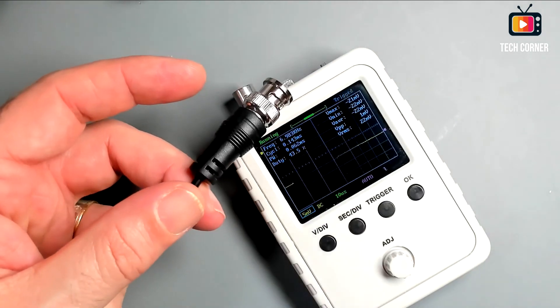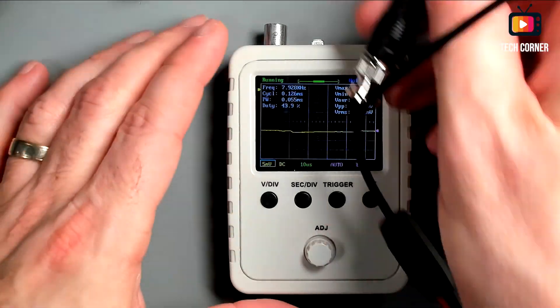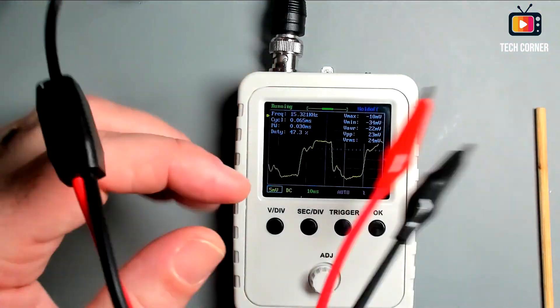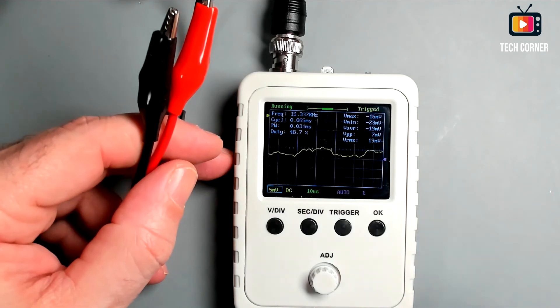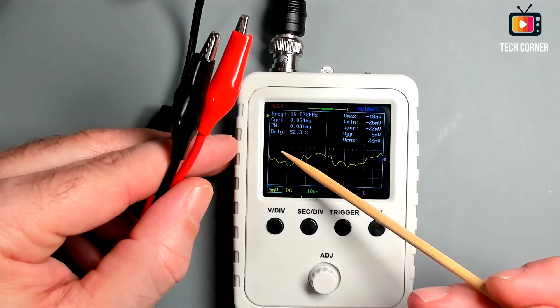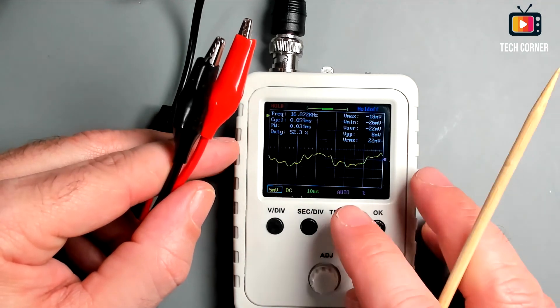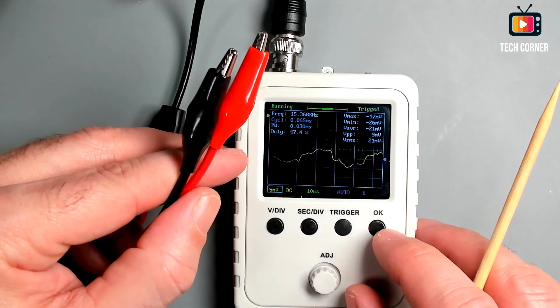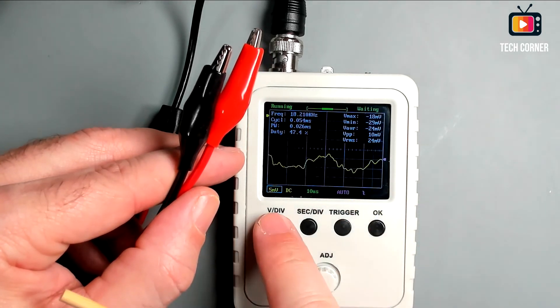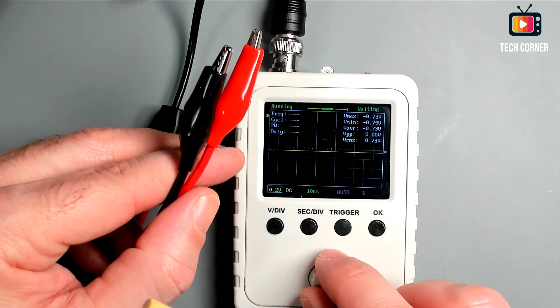I will now connect the test probe and it should be possible to see that it will work as an antenna capturing all the radio signals around the oscilloscope. As you can see it is working almost as a spectrum analyzer that captures the radio frequencies around us. If we increase the voltage in the sensitivity it probably will disappear.